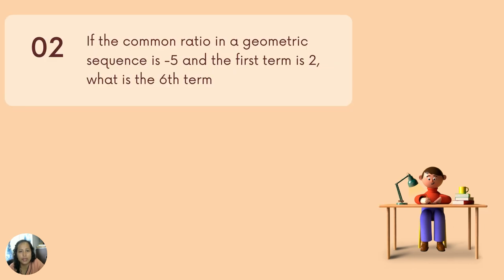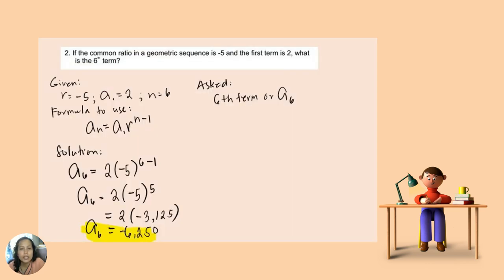Now let's go to another problem. Suppose the common ratio in the geometric sequence is negative five and the first term is two — what is the sixth term? To solve this, we identify the given: the common ratio r is negative five, the first term a sub one is two, and n is equal to six because we are looking for the sixth term. What is being asked is a sub six.